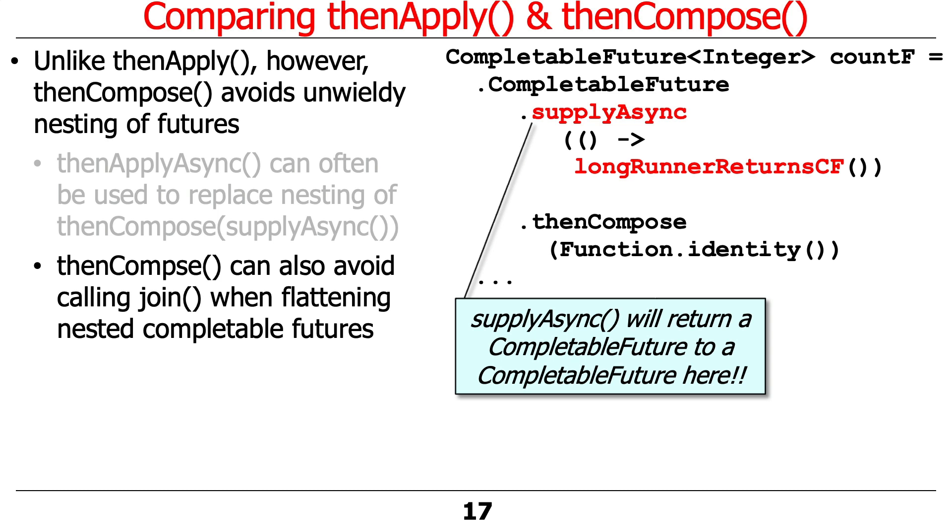You can also use thenCompose to avoid calling join when flattening nested completable futures. And this is a rather esoteric use case, but I've come across some situations where it helped sometimes. So here's an example. We're going to call supplyAsync, which will asynchronously run a long-running method that itself returns a CompletableFuture. And that would then lead to a CompletableFuture to a CompletableFuture. What you can do then, if you so desire, is use thenCompose to give the function identity, and that will make sure it comes back as a CompletableFuture to Integer as opposed to a CompletableFuture to a CompletableFuture to Integer. So that's one way to do this.